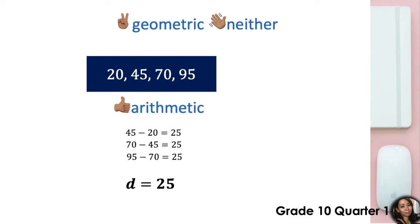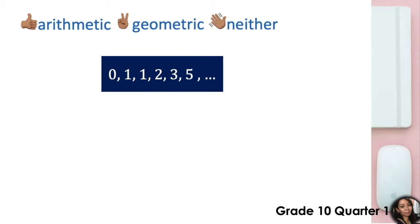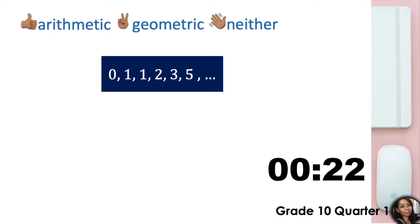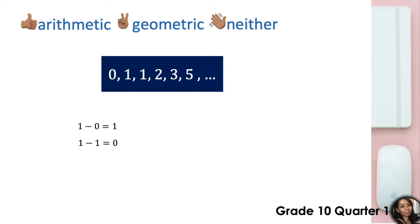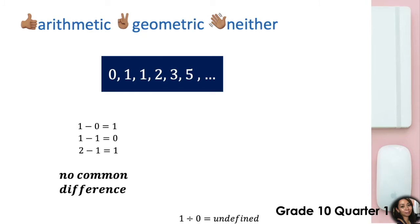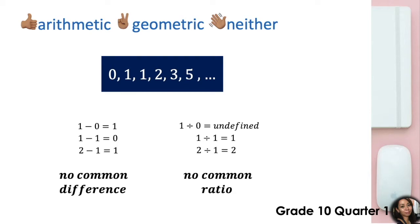Let's try the second problem: the sequence 0, 1, 1, 2, 3, 5, and so on. We notice that there is no common difference. Let's try if this is geometric — there is also no common ratio. So the answer is neither. I must see you waving your hand!